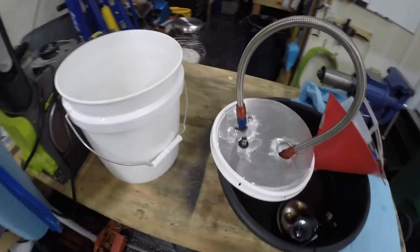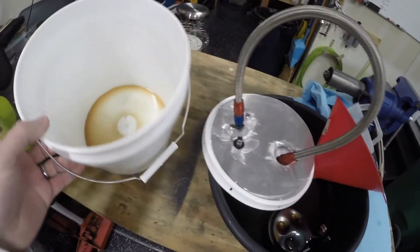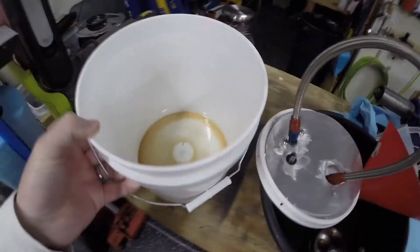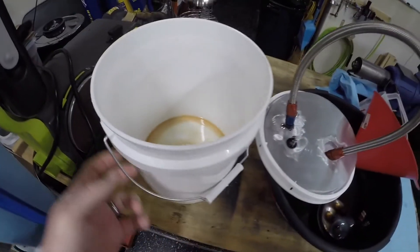Alright, let's take a look at the guts of the priming bucket. It's really just a standard three-gallon food-grade bucket you get at Home Depot. That's actually where I got this.